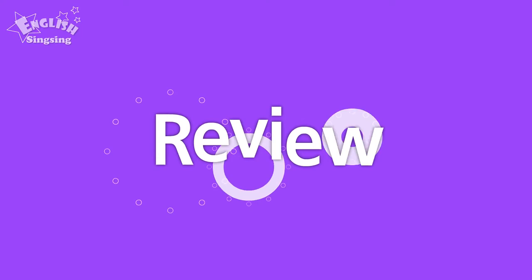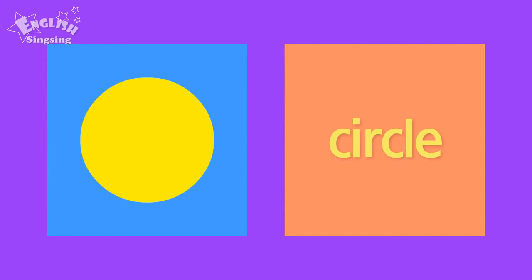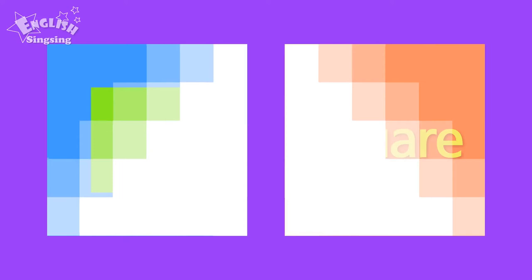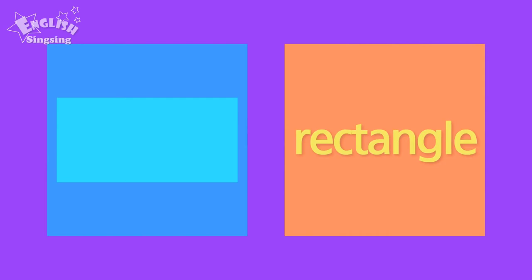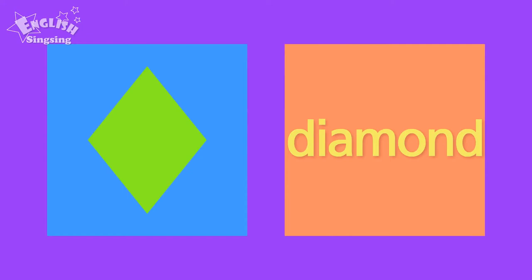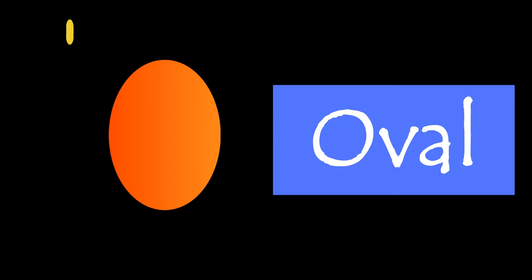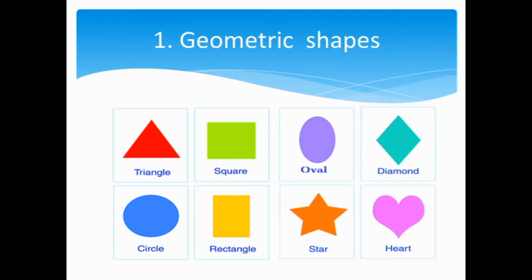Review: circle, triangle, square, rectangle, diamond, heart, star, oval. Those are the geometric shapes that you can see around you.